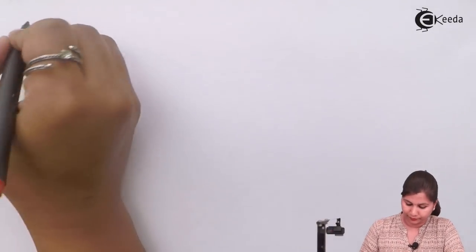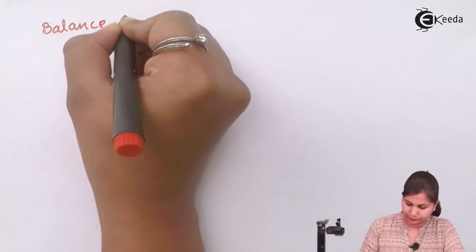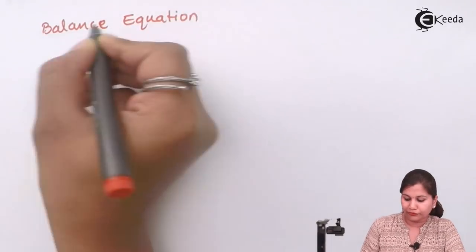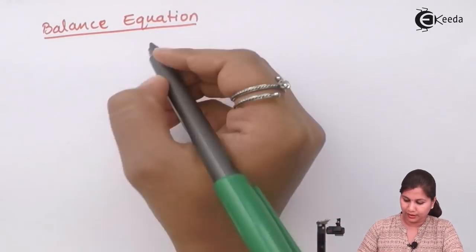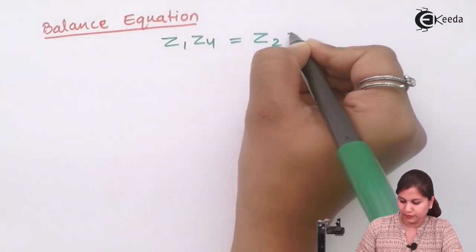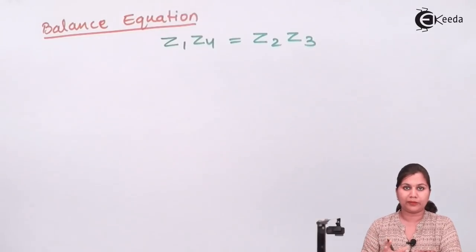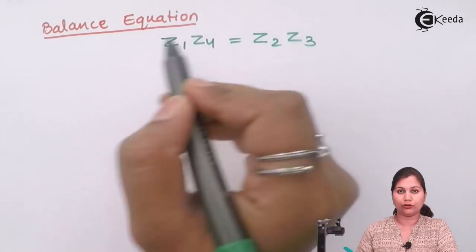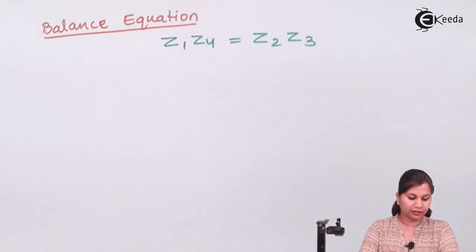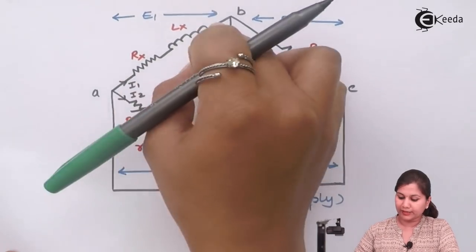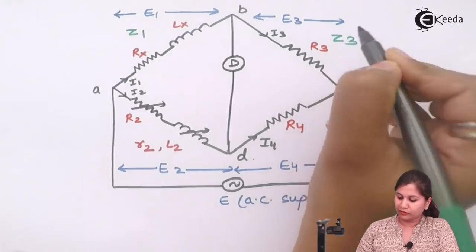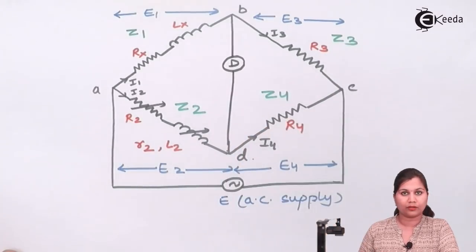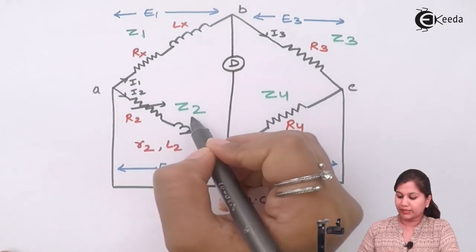To find out the value of the unknown inductance, we will use the balance equation of the alternating current bridges. The general form of the balance equation is Z1·Z4 = Z2·Z3, where Z1 is the impedance in the first arm, Z4 in the fourth arm, Z2 in the second arm, and Z3 in the third arm.